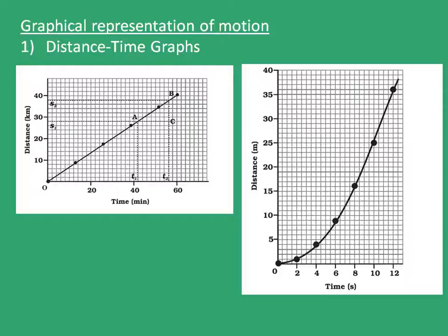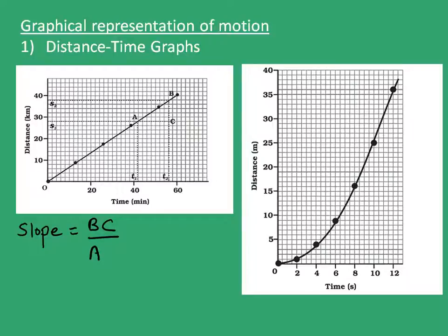Here are two examples of distance time graph. The first example is an example of constant velocity. Velocity is given by the slope of the graph. We can clearly see here that the slope of the graph is constant. The slope is found out by the distance BC divided by the distance AC.